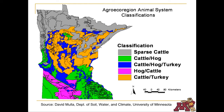This map shows how different types of livestock production play out across the state. Note that the shading represents the predominant animals grown in these areas, and that cattle refers to both beef and dairy animals.